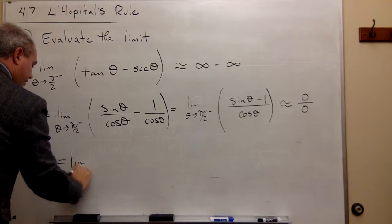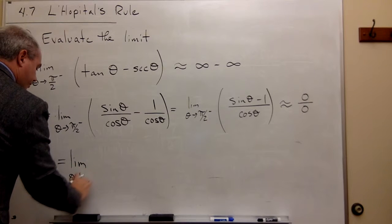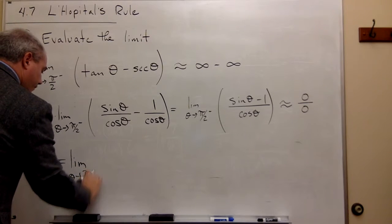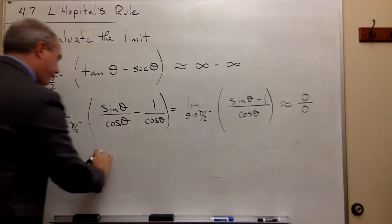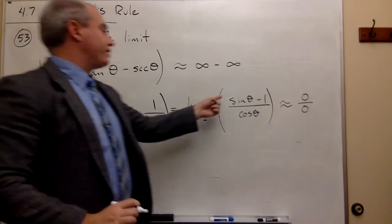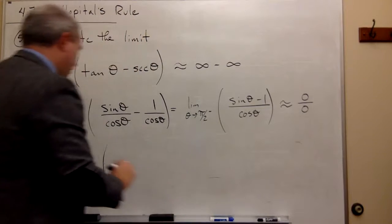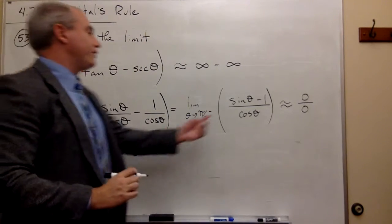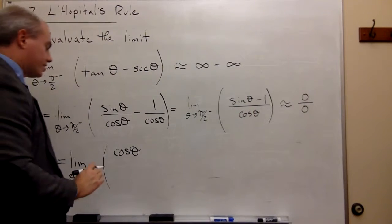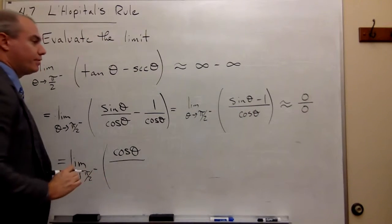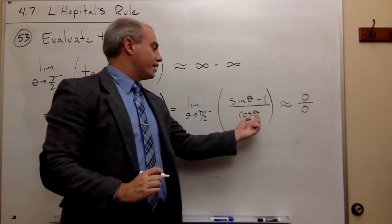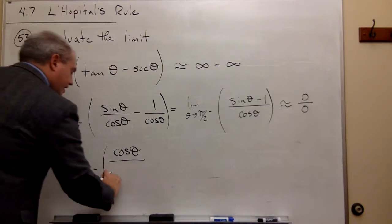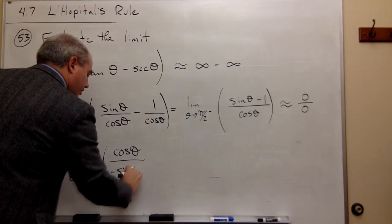So this is the limit as theta goes to pi over 2 from the left of the derivative of the top. Well, the derivative of sine of theta is cosine of theta, and the derivative of minus 1 is 0. So I just get cosine of theta on the top. And the derivative of cosine of theta on the bottom is negative sine of theta.